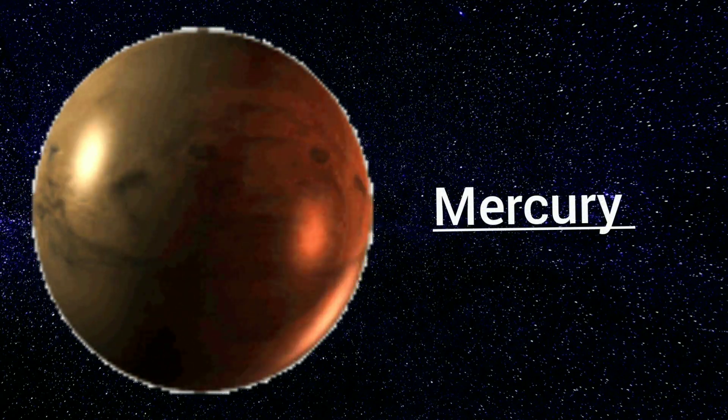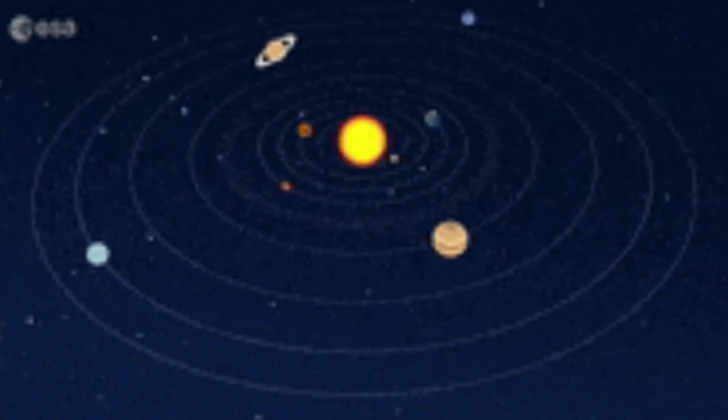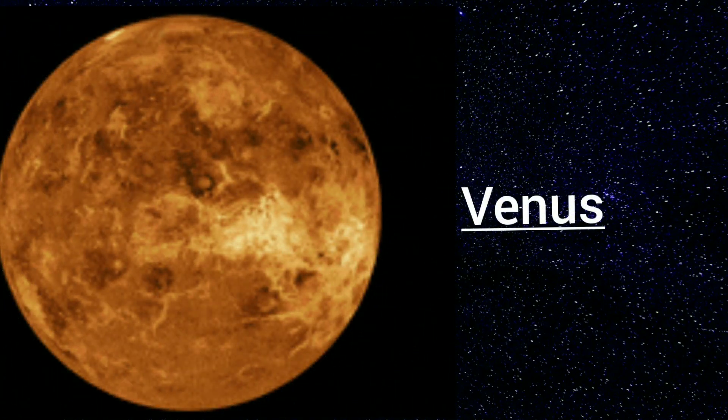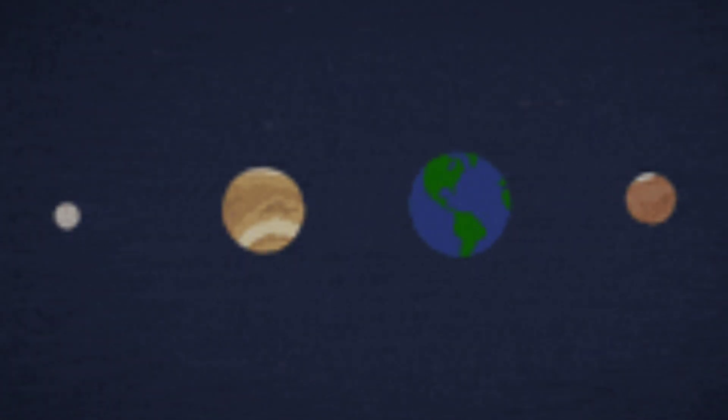Mercury is the smallest and the closest to the Sun. Then it's Earth's sister, Venus, who is the brightest and the hottest one.